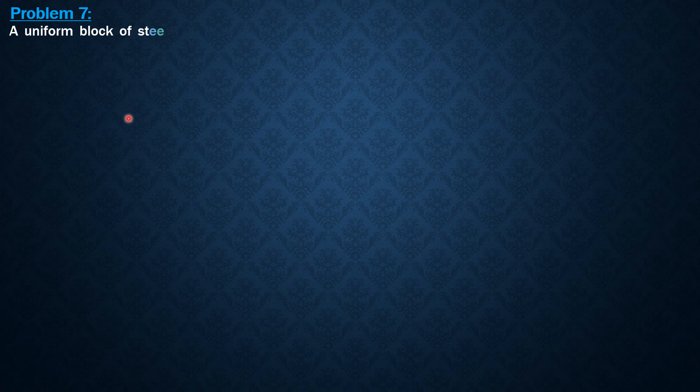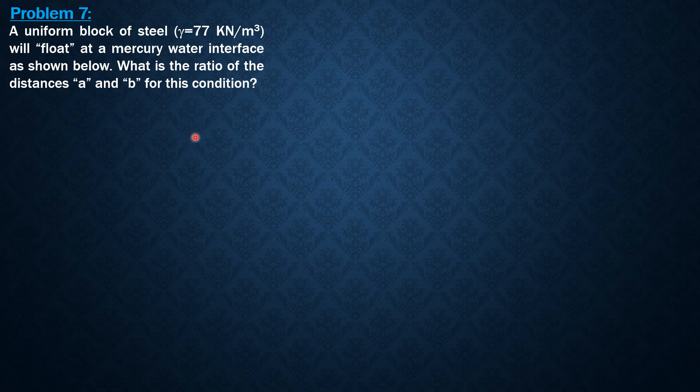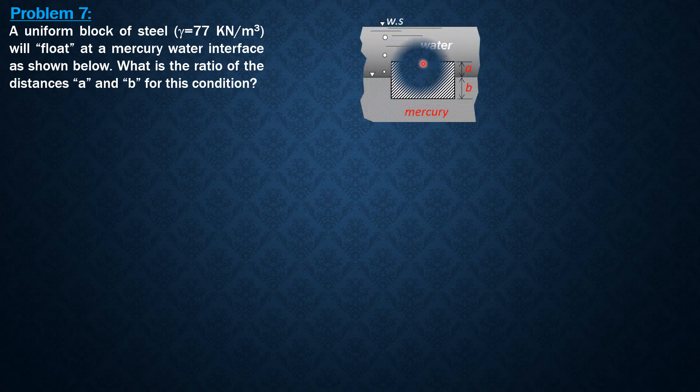Hello everyone, I'm going to discuss the solution to example seven on buoyancy. The problem states: a uniform block of steel with specific weight 77 kilonewtons per cubic meter will float at a mercury-water interface as shown in the figure. What is the ratio of the distances a and b for this condition?